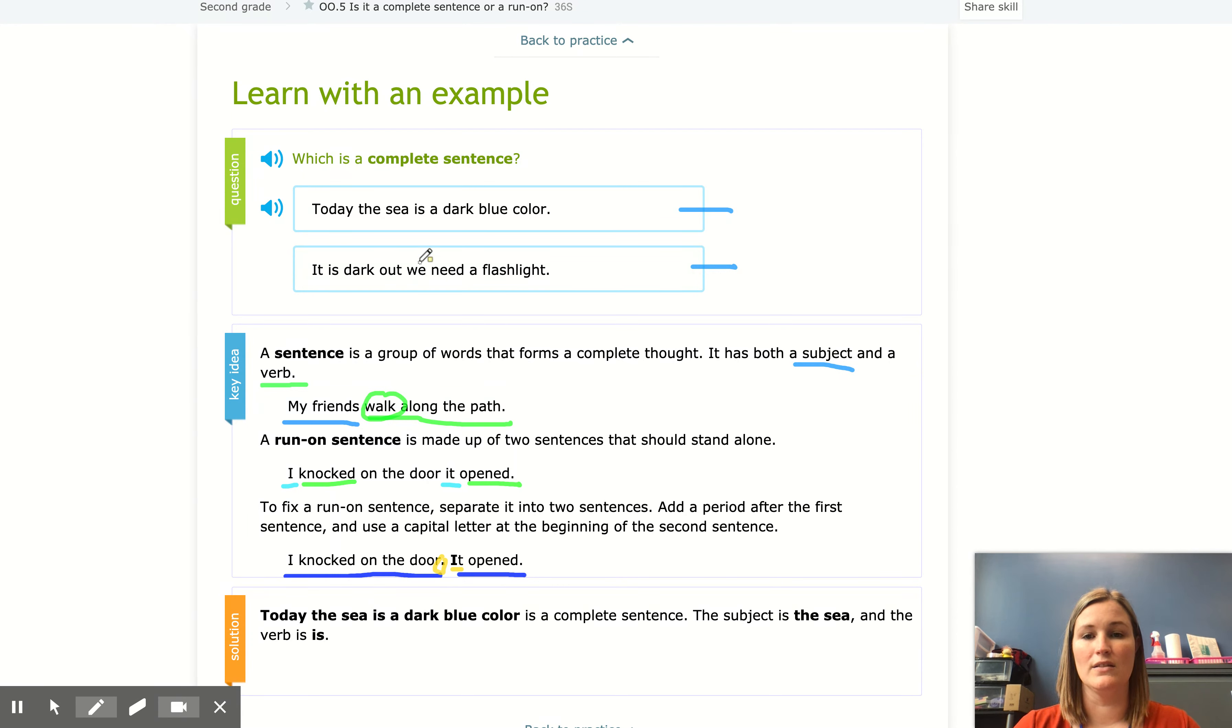So our solution, which one of these, I want you to think to yourselves. Which ones up here are complete sentences? So here I have my subject the sea and my verb up here is going to be is, and this one I have my subject is it and actually we is also a subject. It's another person doing something. We have a verb of is and need. So think to yourself which one is a complete sentence.